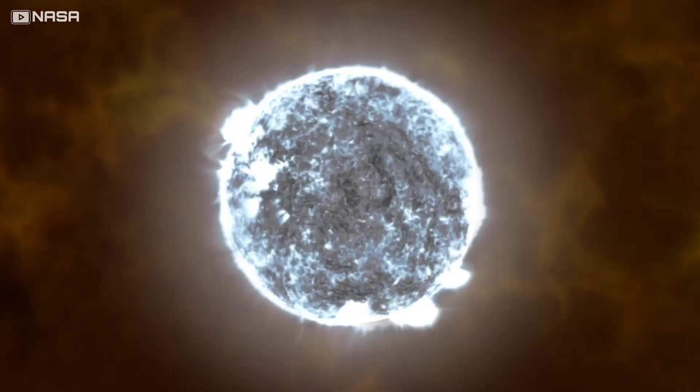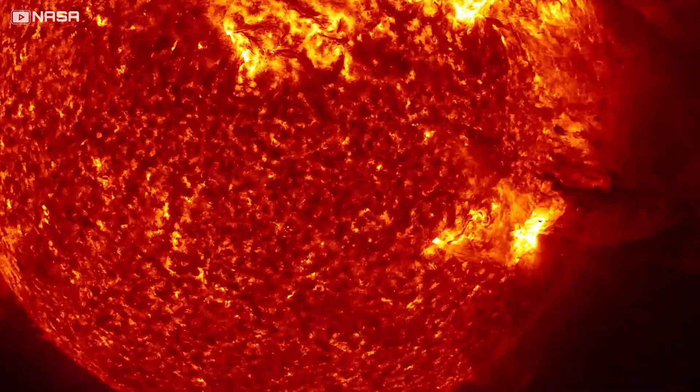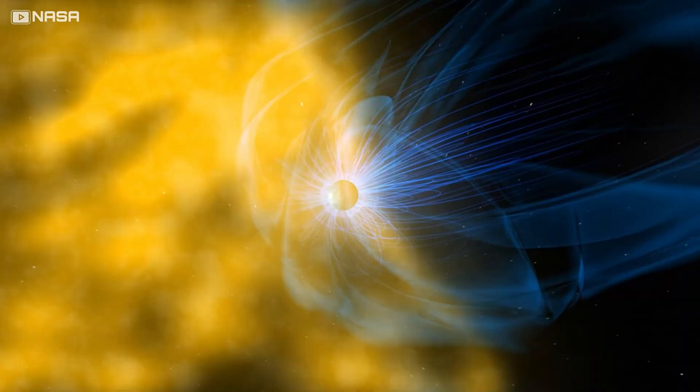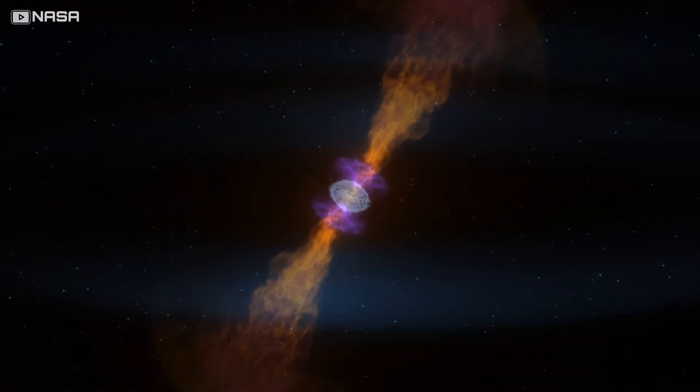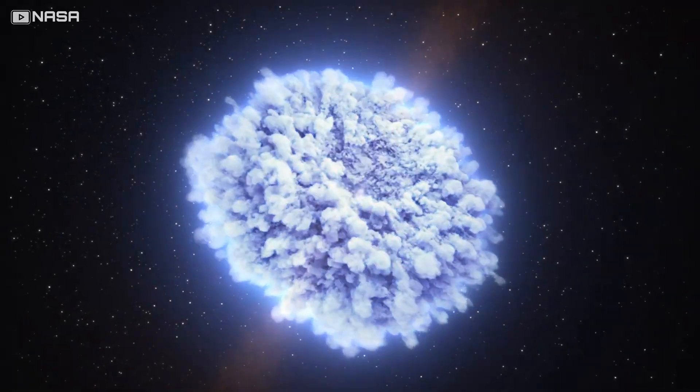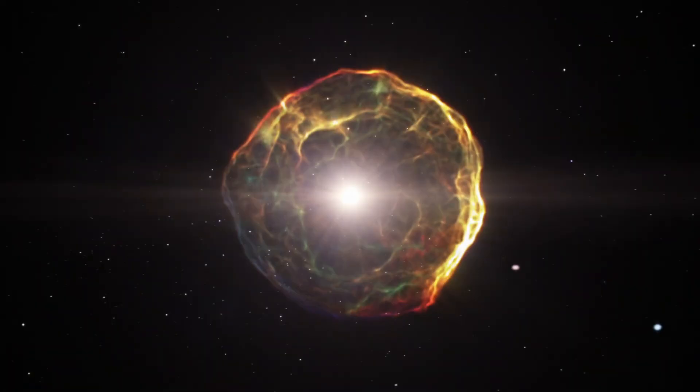The numbers behind all this are hard to believe. The sun outputs 400 septillion watts. That's four followed by 26 zeros. A gamma-ray burst can match that output not for days, not for hours, but for seconds. Just seconds. And those seconds are enough to reshape the universe.